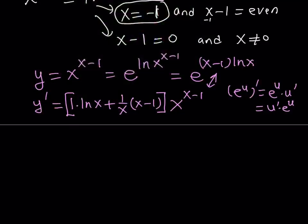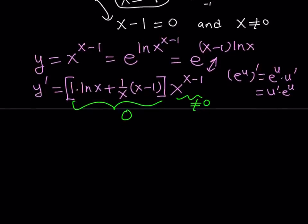I'd like to look at the minimum and maximum points of this function, if there are any. I want to basically know how this function behaves. So I'm going to set the derivative equal to 0, but notice that x to the power x minus 1 cannot equal 0. So I'm just going to set the other part, which is a factor of y prime, equal to 0. And let's see what this gives us.